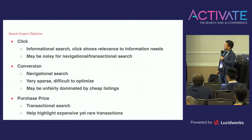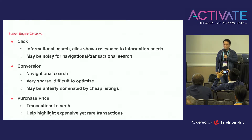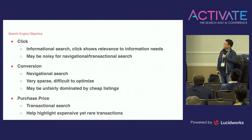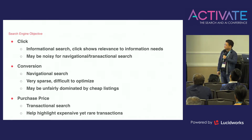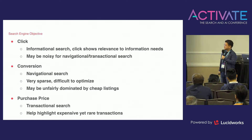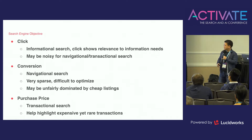We have three kinds of feedback signals. Clicks are mostly good for informational search — if you click, it's a positive signal — but may be noisy for navigational or transactional search. Conversions are mostly good for navigational search where users already know what they want to buy, but may be unfairly dominated by large purchase volumes of cheap listings. Purchase price is only used in transactional search; it helps highlight expensive but less commonly purchased items.